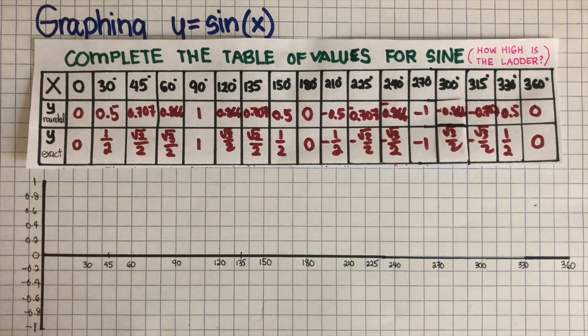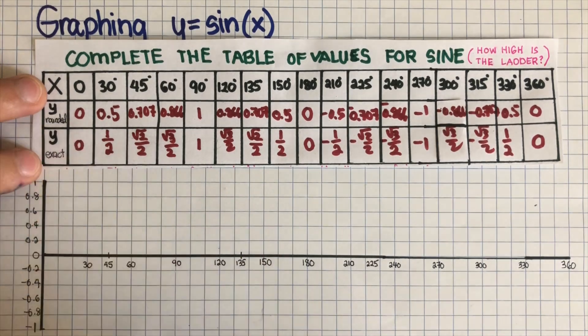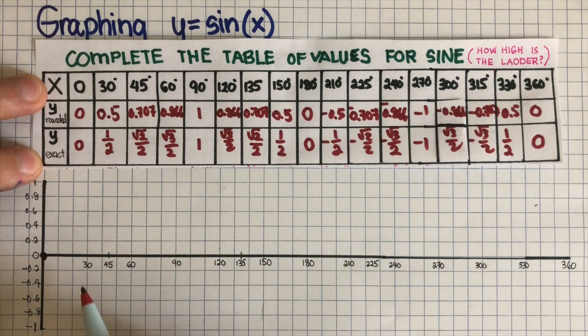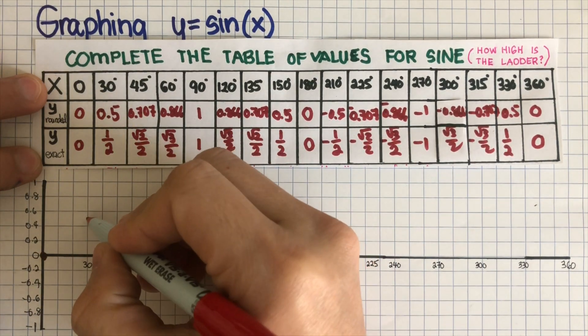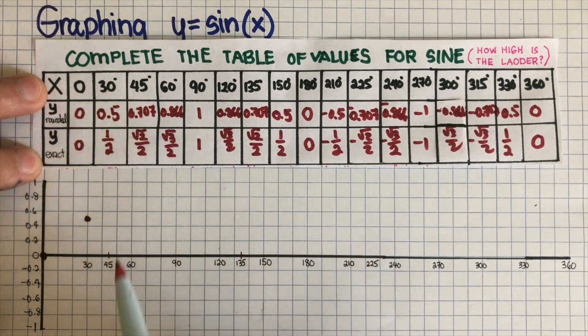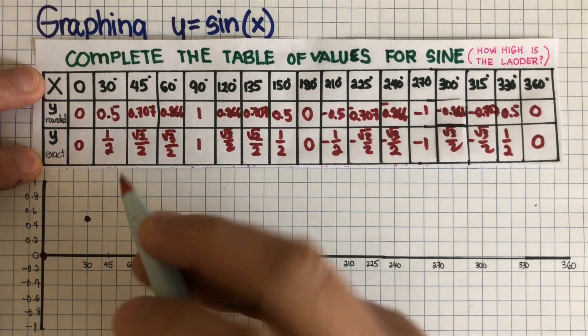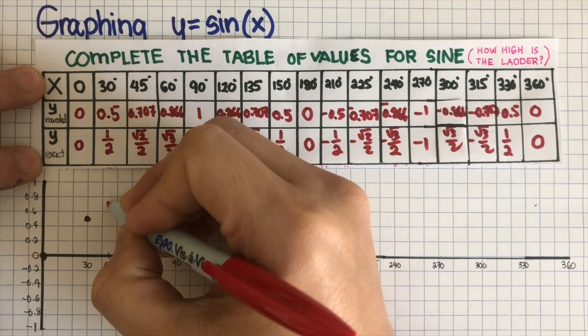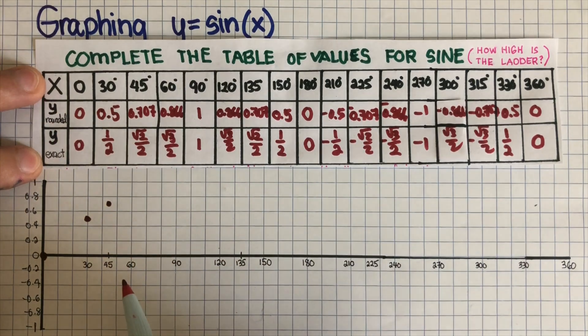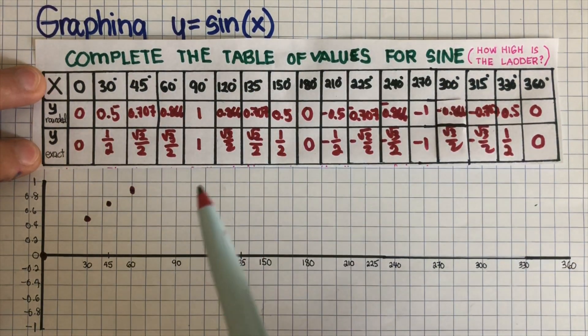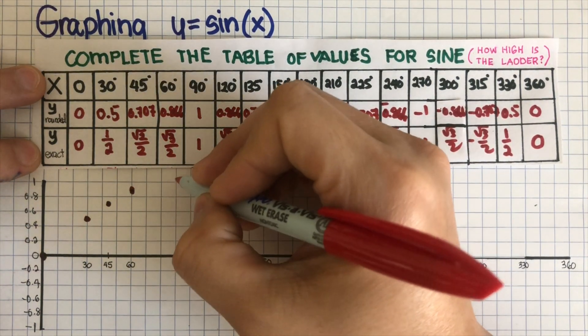So let's get started. Let's see what is the shape of the parent graph of y equals sin x. So we start with 0 is 0, and then 30 is 0.5, it's going to be halfway. And then 45 is 0.707, so somewhere around here. And then 60 is 0.866, it's around here. And then 90 is 1.